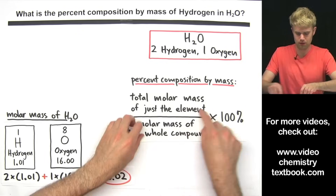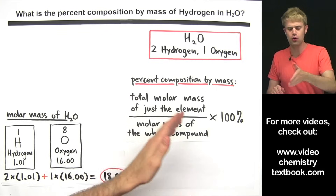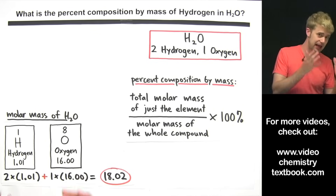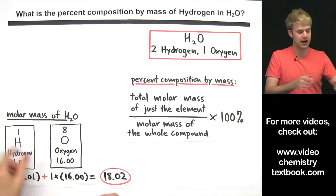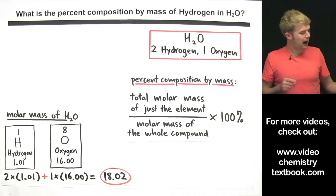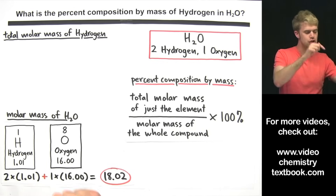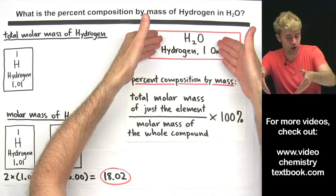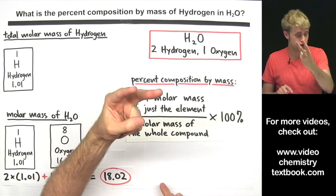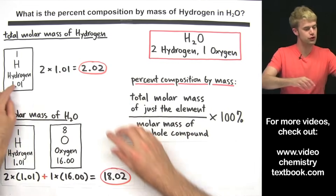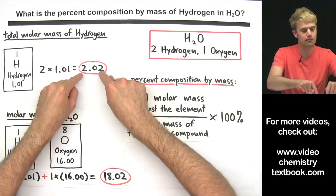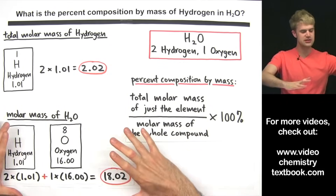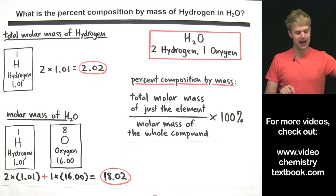Now let's talk about the top of the fraction — the total molar mass of just the element. When we calculated the molar mass of H₂O, we added hydrogen and oxygen together. But for the numerator, we want only the hydrogen. The formula shows two hydrogens, each weighing 1.01, so we do 2 × 1.01 to get the total molar mass of just the hydrogen.